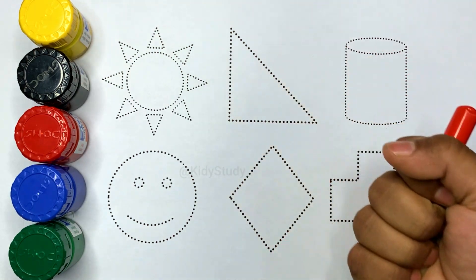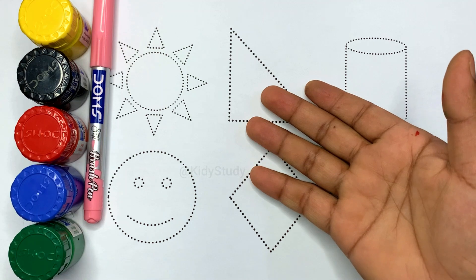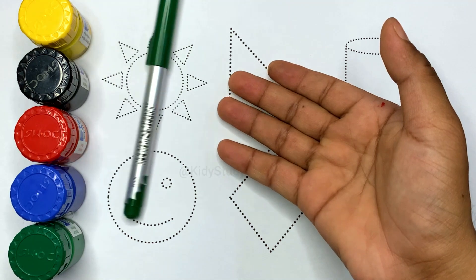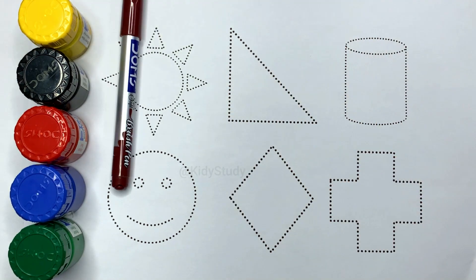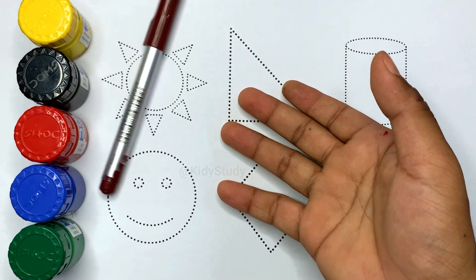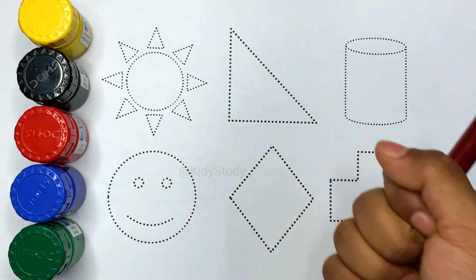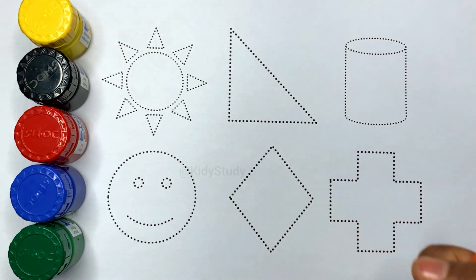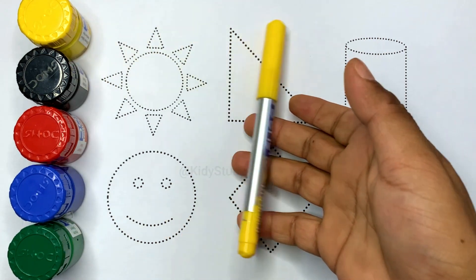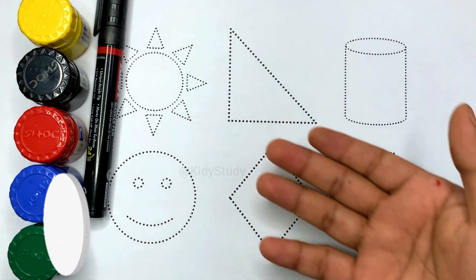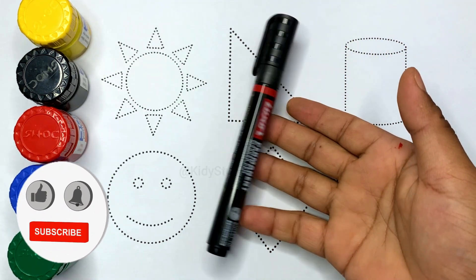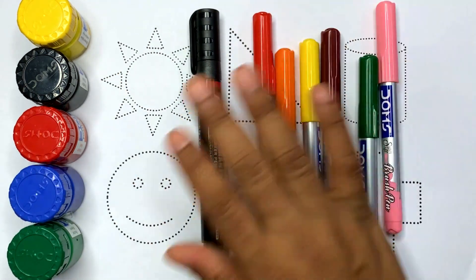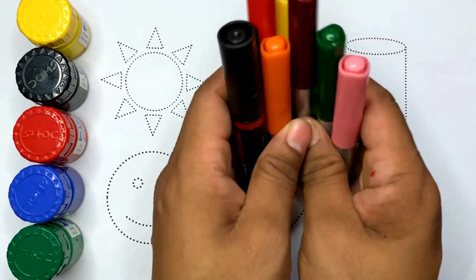Red color, light pink color, green color, brown color, orange color, yellow color, black color. Colors name. Hello kids, welcome to a new video. Kids, today we will learn 2D shapes name and 2D shapes drawing.